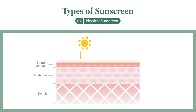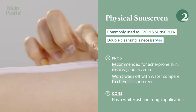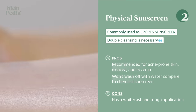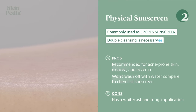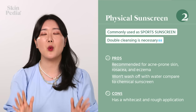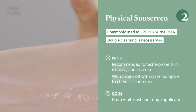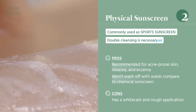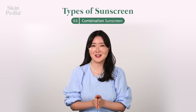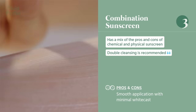Physical sunscreens do not absorb into the skin and reflect UV rays. Since it doesn't absorb into the skin, it's recommended for acne-prone skin and skin with rosacea and eczema. The cons are that it has a white cast and the application is a little rough, so it's more preferred by oily skin types rather than dry skin types. It's also often used when playing sports and recommended for outdoor and water activities. It doesn't get removed easily, which is a plus, but since it is more difficult to remove, if you don't do a thorough double cleanse, it can cause breakouts. Combination sunscreens have a combination of all the pros and cons of chemical and physical sunscreens — less of a white cast, good application, and double cleansing is recommended.